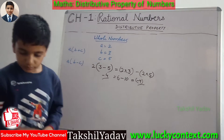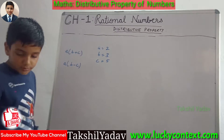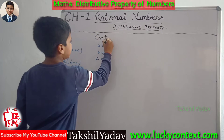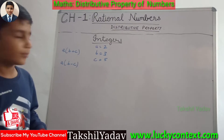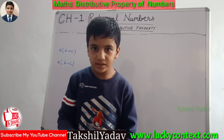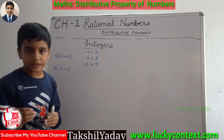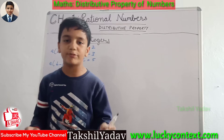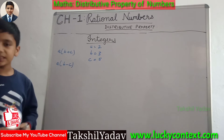Hence whole numbers are distributive in the case of multiplication over addition and subtraction. Since the properties of natural numbers are the same as those of whole numbers, we do not need to discuss them separately. So we will just discuss this property for integers and rational numbers.